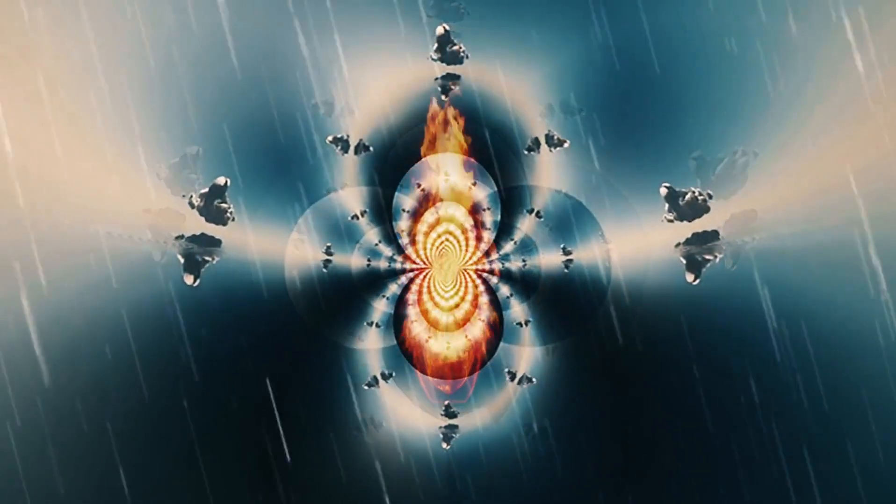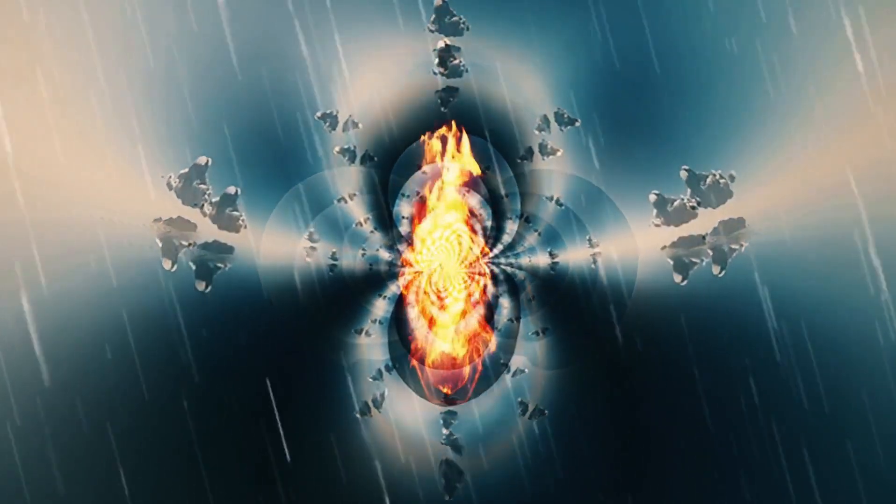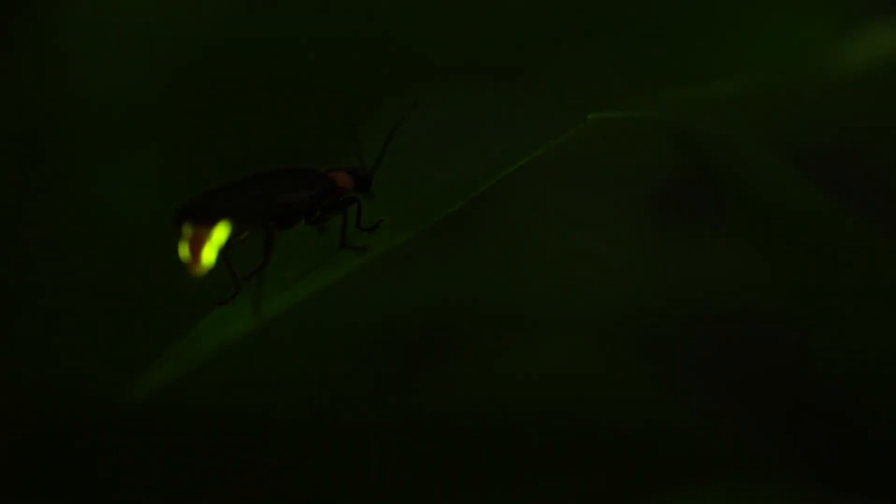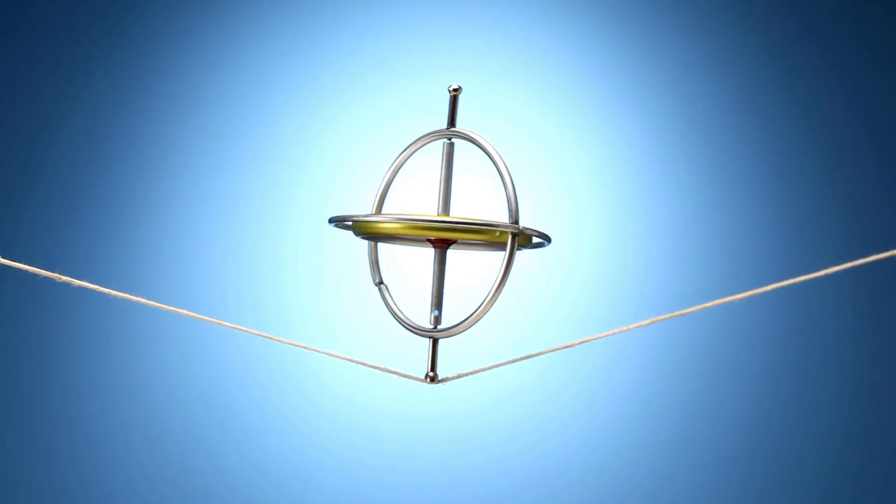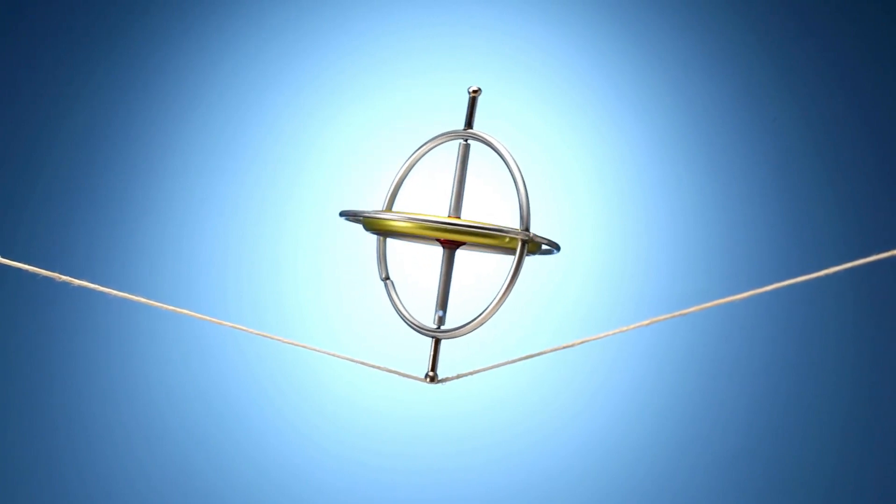As red supergiants approach the end of their lives, these fusion processes become increasingly unstable, with the star struggling to fuse heavier and heavier elements. Eventually, it reaches a point where it can no longer generate enough energy to resist the force of gravity, setting the stage for its ultimate collapse and potentially a supernova explosion.